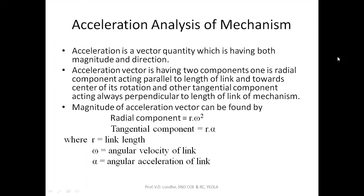As it is the ratio of velocity with respect to time, it is a vector quantity having both magnitude as well as direction. When representing the acceleration component by doing the acceleration analysis for a given mechanism, this acceleration vector has two components. One is the radial component, which is acting parallel to the link length, and another one is the tangential component, which is acting perpendicular to the link length.